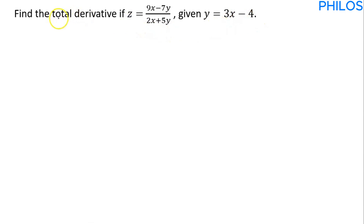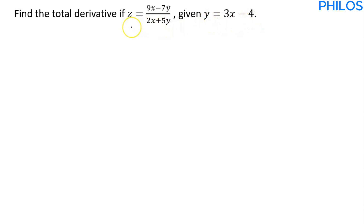When the question says we should find the total derivative, it means we should find dz over dx, or dz over dy — not partial z partial x. Since we have the value of y separately, given as 3x minus 4, let's find dz over dx.